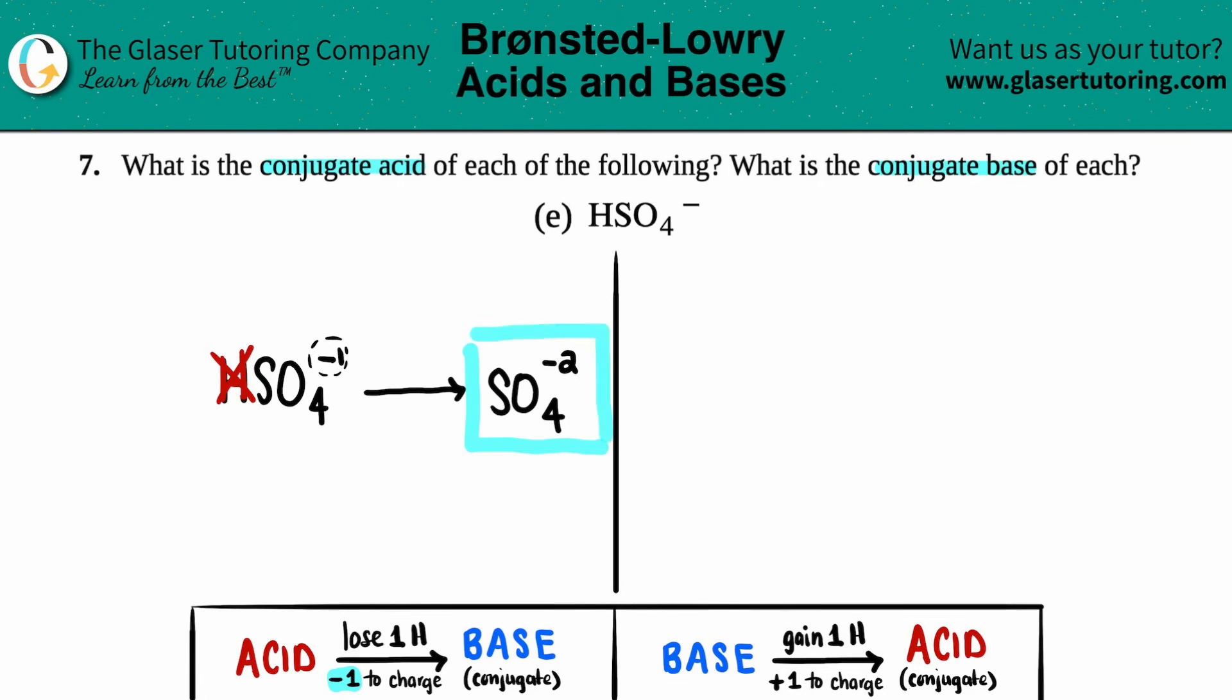And that makes sense. Sulfate, SO4, always has a negative two charge. And this would be the conjugate base. Now let's do the same thing if HSO4 minus was acting as the base. And what's going to happen with the acid?